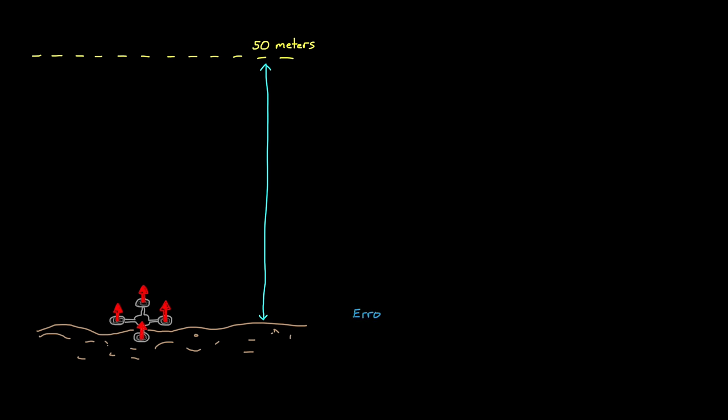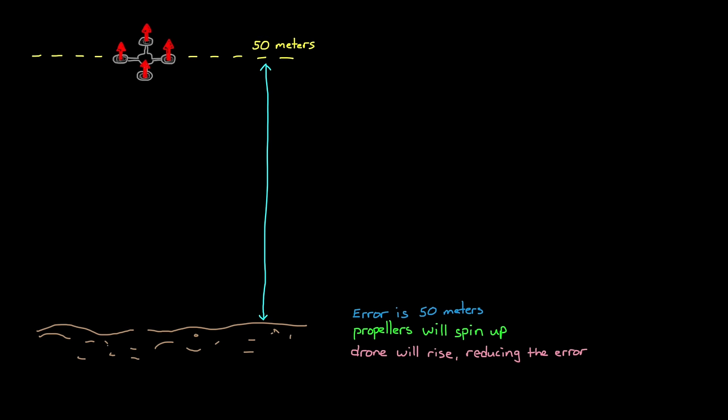Well, when the drone is on the ground, there's an error of 50 meters, which would generate a large propeller speed, causing the drone to lift off and start to rise, reducing the error. So far, so good. But let's imagine the drone was able to rise all the way to 50 meters. What would happen now? Well, the error would drop to zero, since the command and the output are both 50 meters. This would then shut off the propellers. Lift would stop, and the drone would fall back to Earth.